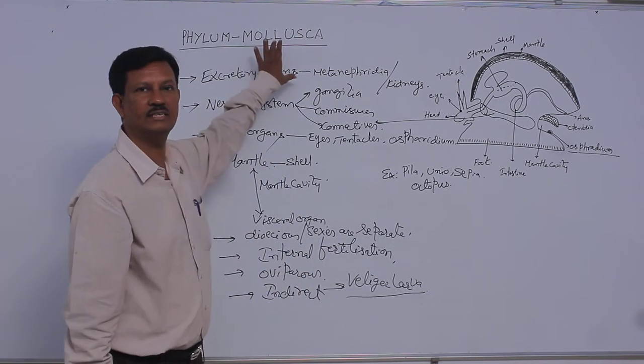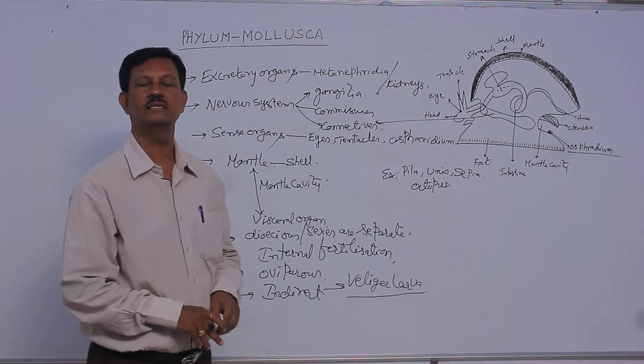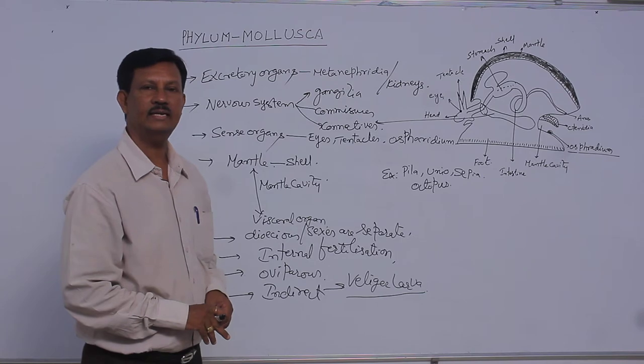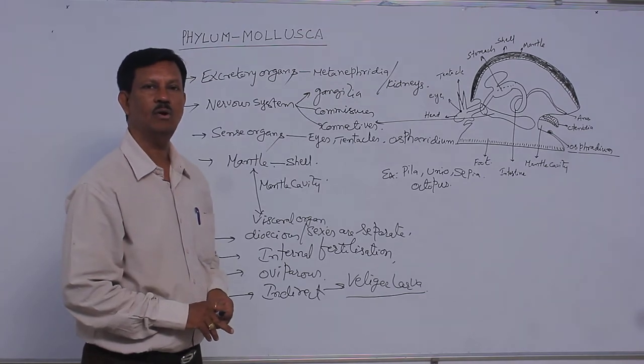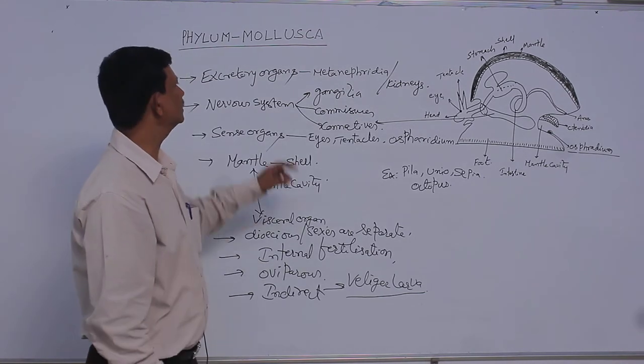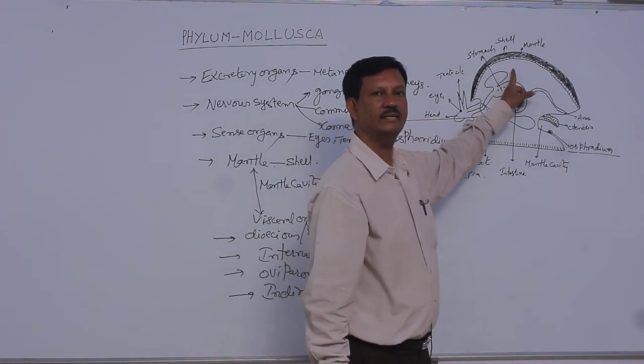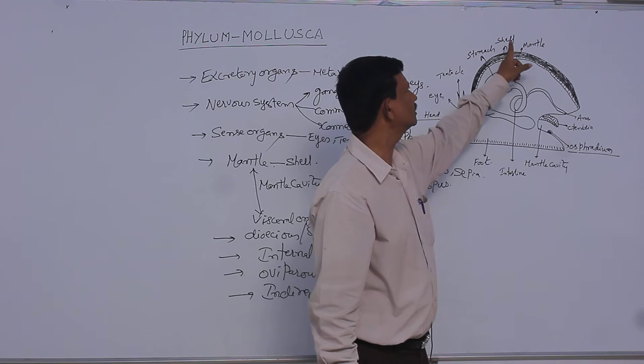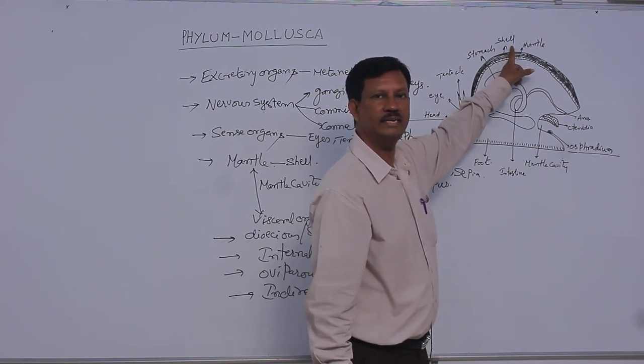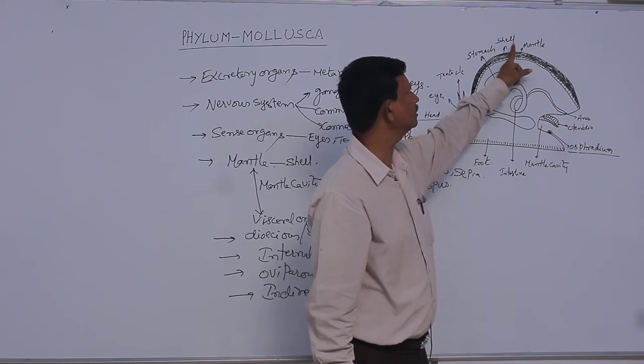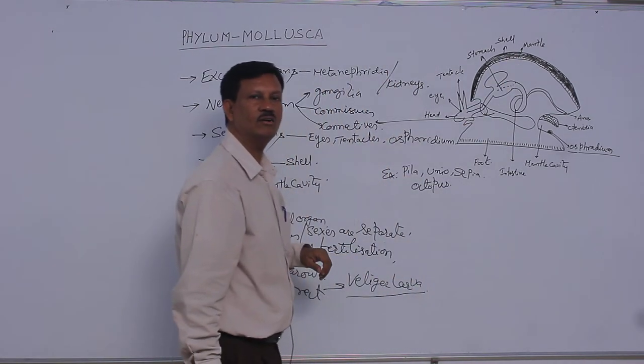Once again we have to discuss some important characters. Mollusca means soft-bodied animals. The study of molluscans is known as the malacology. Due to the presence of soft body, the skin secretes mantle. Mantle secretes the shell which is present on the outer side of the body. It is made up of calcium carbonate, it gives protection to the inner parts. The study of shell is known as conchology.